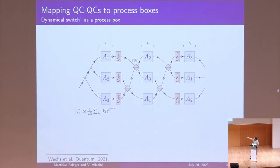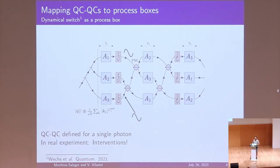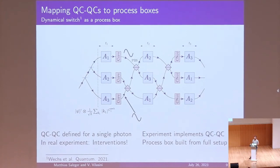The QCQC is only defined for a single photon. If you build this in a lab and ask the QCQC framework what happens if you put in one photon, the framework will tell you what should happen. But in a real experiment you can do interventions — take one more photon and put it somewhere in the setup — and now the QCQC framework doesn't know what should happen. In a sense, the experiment implements the QCQC but not vice versa. What we do is think about what should happen during these interventions, and this is essentially the behavior of the process box. The process box models how the experiment works, whereas the QCQC is more abstract — many experiments can correspond to a single QCQC, and every experiment corresponds to a single process box.